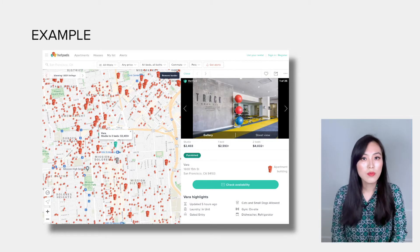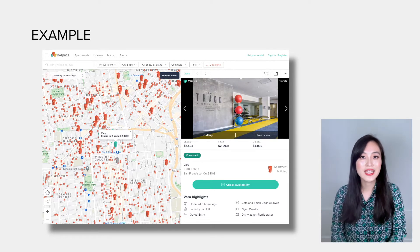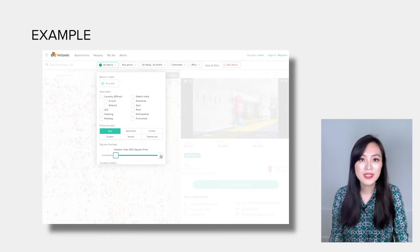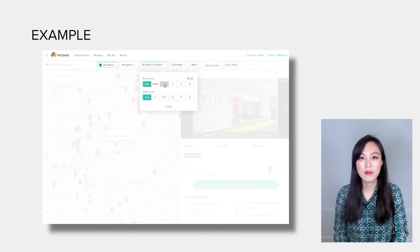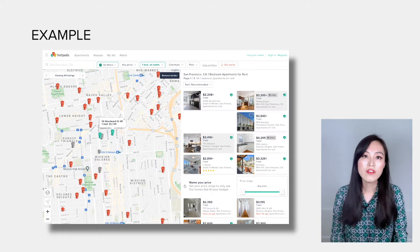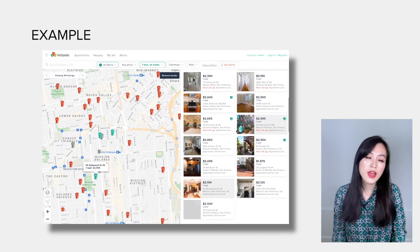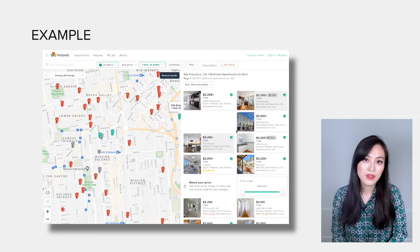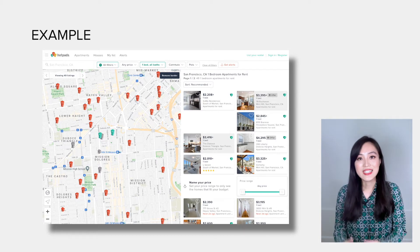You look at the rental prices of similar apartments in the same area—similar in the sense that they have same size, number of bedrooms, number of bathrooms, and amenities. Then you use the average rent of those apartments to infer if the apartment you are interested in is priced reasonably or not. What you have done is exactly a k-nearest neighbors algorithm.